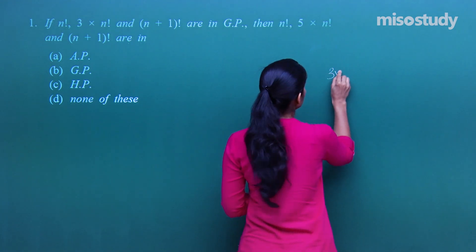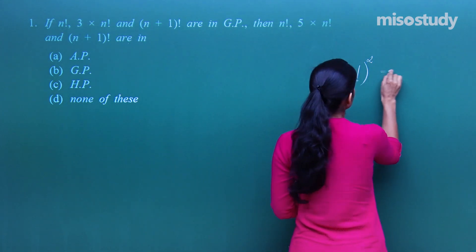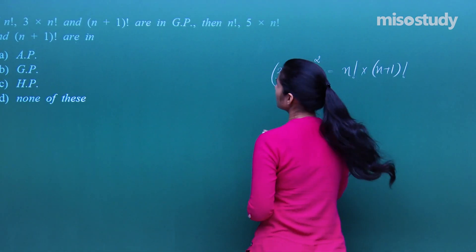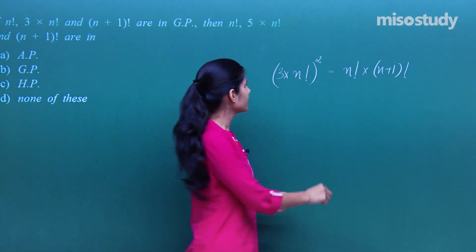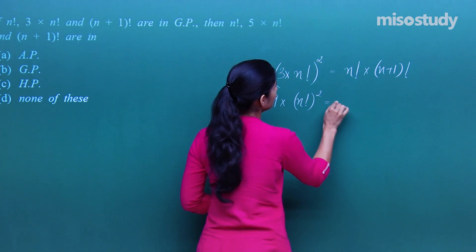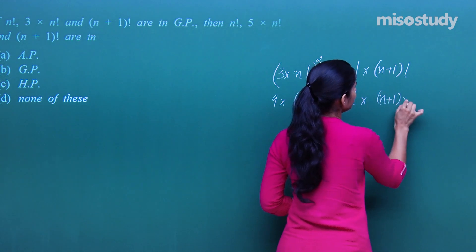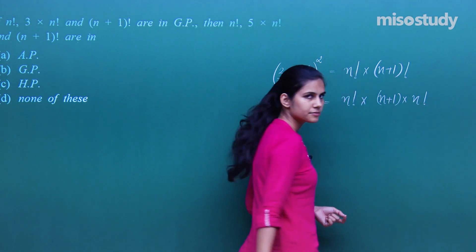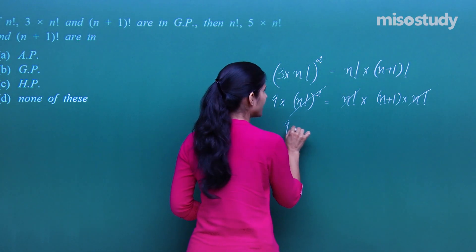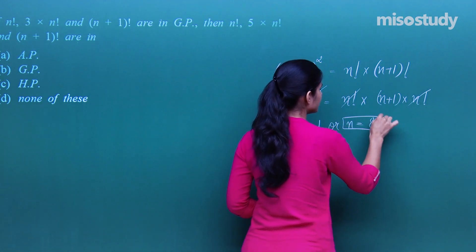So (3·n!)² = n! · (n+1)!. This becomes 9·(n!)² = n! · (n+1)·n!. The (n!)² cancels from both sides, leaving 9 = n+1, so n = 8.